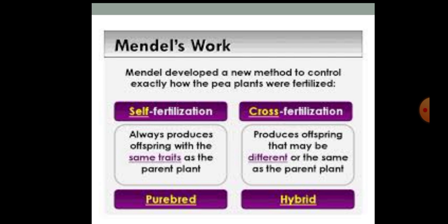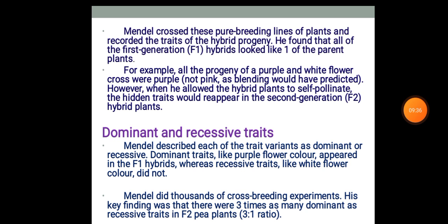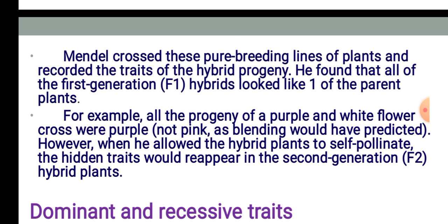When offspring are different from the parent, it indicates hybrids — hybrid means a combination of two different varieties. Mendel crossed these pure-breeding lines of plants and recorded the traits of the hybrid progeny. He found that all of the first F1 — first generation — hybrids looked like one of the parent plants. For example, all the progeny of a purple and white flower cross were purple. However, when he allowed the hybrid plants to self-pollinate, the hidden traits would appear in the second generation.